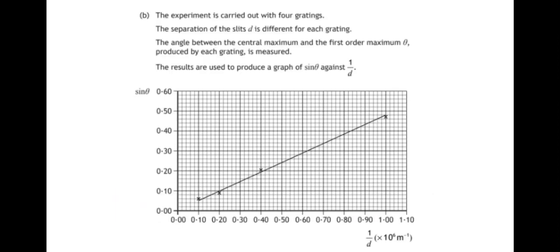Part B. The experiment is carried out with four gratings. The separation of the slits d is different in each grating. The angle between the central maximum and the first order maximum theta produced by each grating is measured. The results are used to produce a graph of sine theta against one over d.